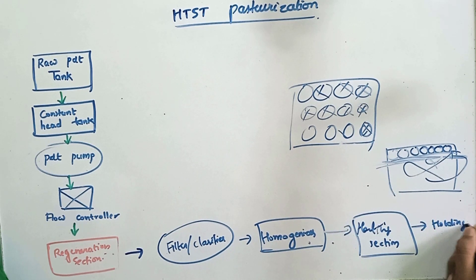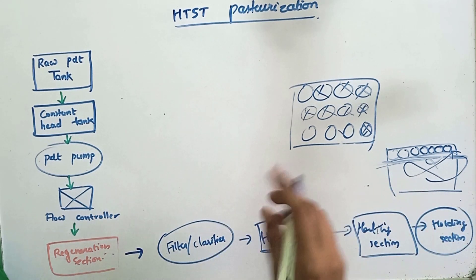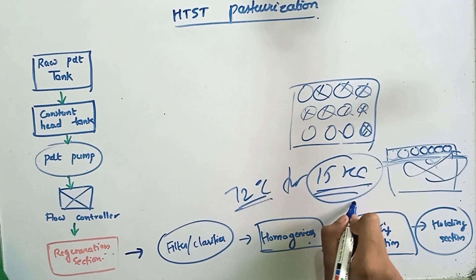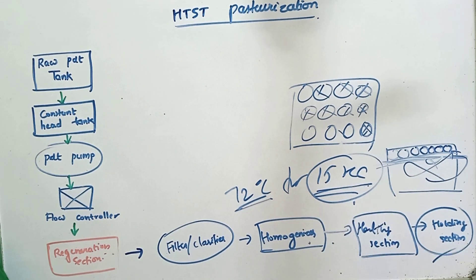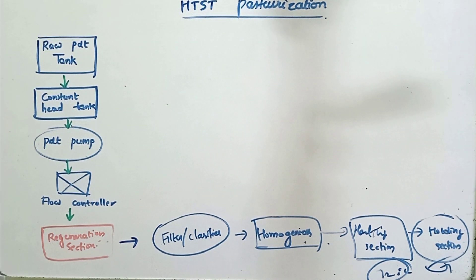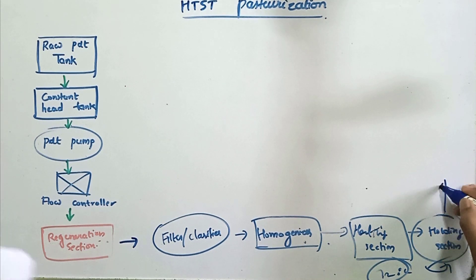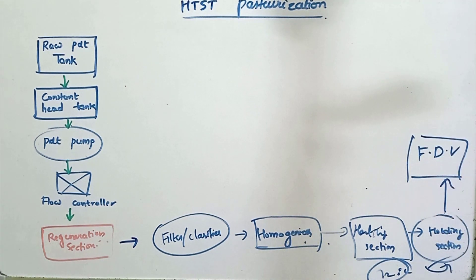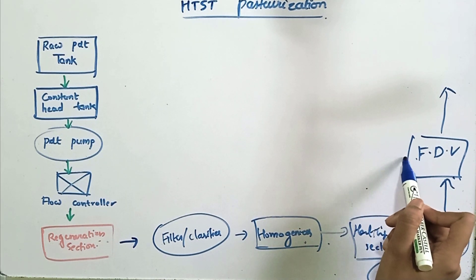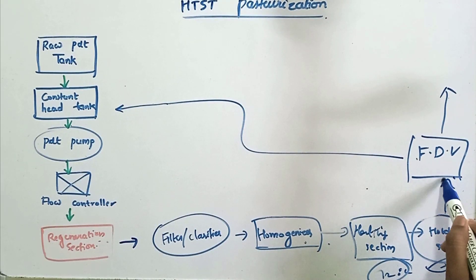The next one is the holding section. In HTST pasteurization, the milk is heated at 72 degrees Celsius for 15 seconds, so we must hold the milk at this temperature for 15 seconds — that is the purpose of the holding section. After holding, the milk is passed into the flow diversion valve. If the milk is properly pasteurized, it flows into the next section. If not properly pasteurized, the flow diversion valve returns the milk back to the constant head tank and the process repeats.